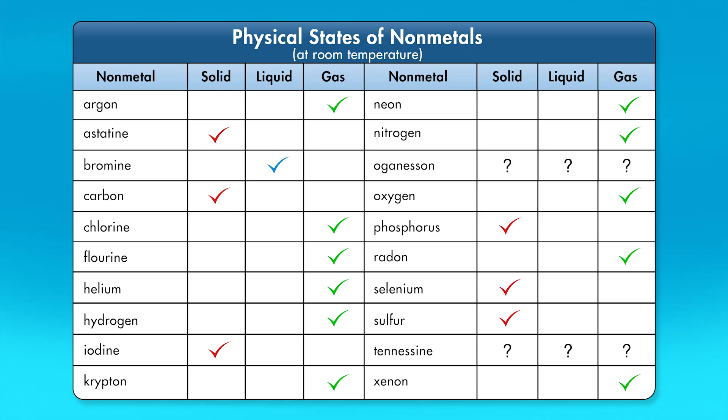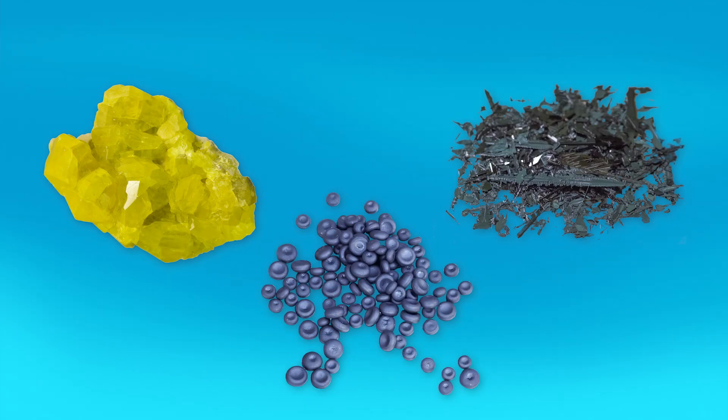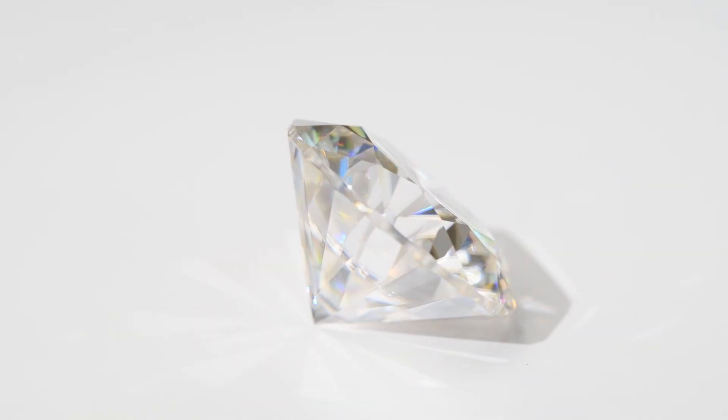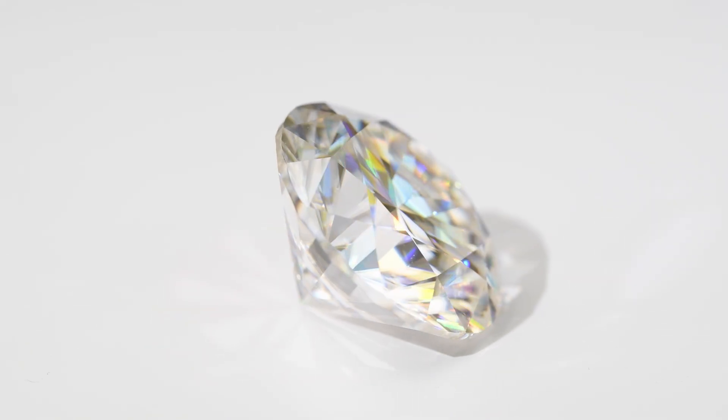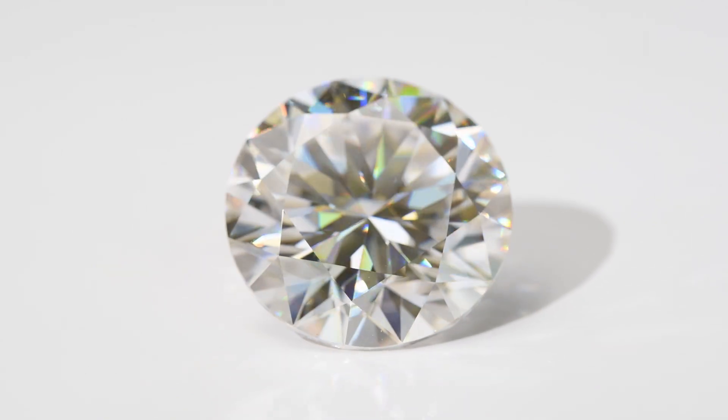2 nonmetals are unstable, radioactive, synthetically produced elements, so we are not yet certain of their physical states. Nonmetal solids are usually dull in color, with little or no luster as seen with these samples of sulfur, selenium, and iodine. The one exception is diamond, which is a form of carbon. Diamond has the brightest luster of any substance on Earth.